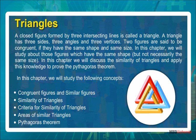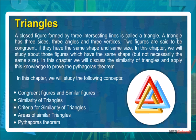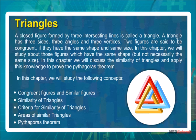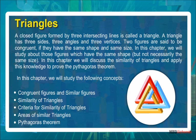Two figures are said to be congruent if they have the same shape and same size. In this chapter, we will study about those figures which have the same shape but not necessarily the same size. We will also discuss the similarity of triangles and apply this knowledge to prove the Pythagoras theorem.